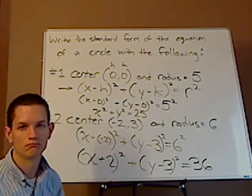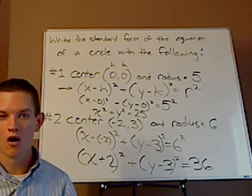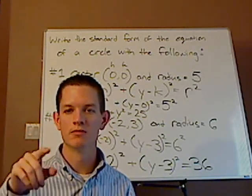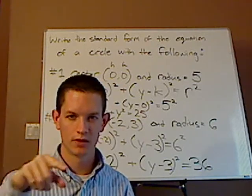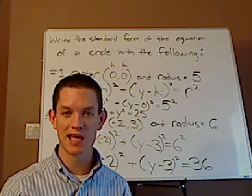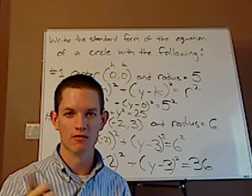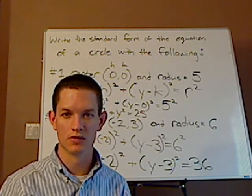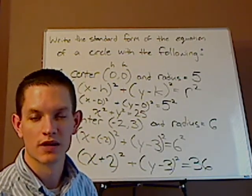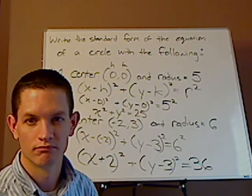And that's it. It's pretty straightforward. Don't make it more complicated than it is - just plug in the missing information. You need your center, which is (h, k), and then you need your radius, which is always given. h is your x coordinate, and k is the y coordinate of the center.